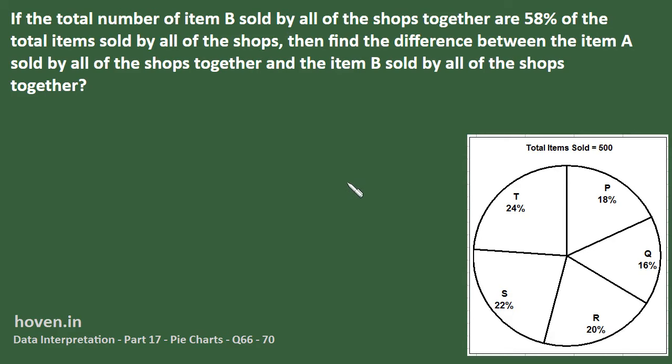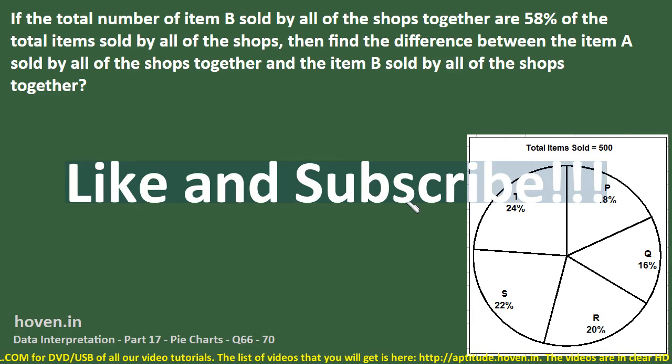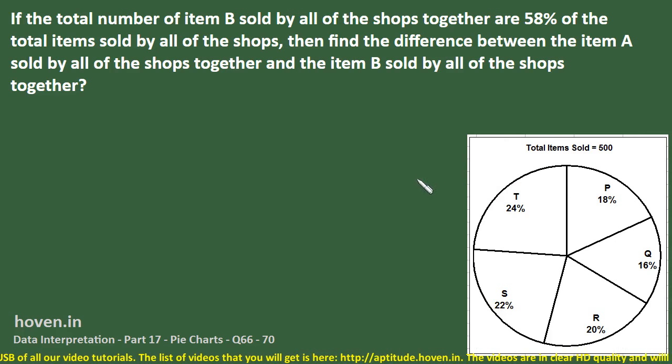We have to answer various questions on the basis of this pie diagram. It says total items sold is 500, and five shops are there: P, Q, R, S, and T. 18% of these 500 are sold by P, 16% by Q, likewise 20, 22, and 24% are sold by other shops.